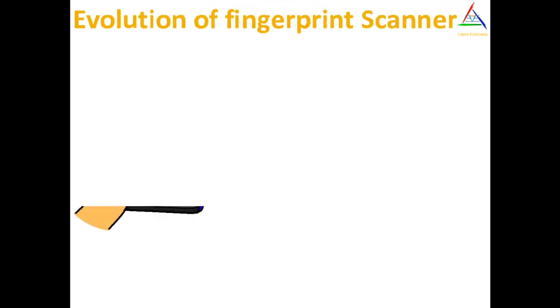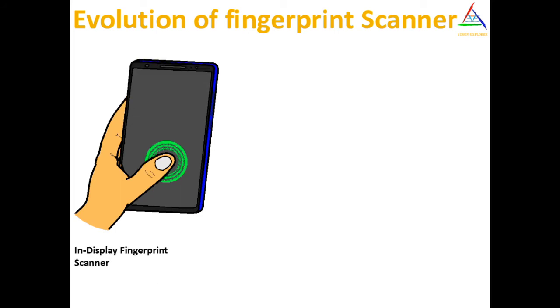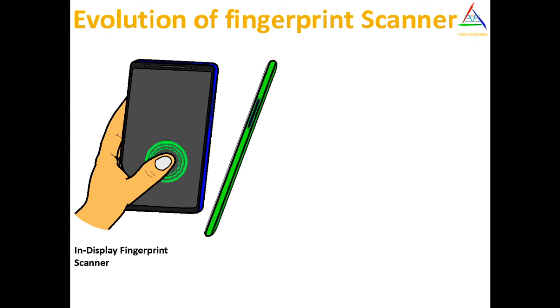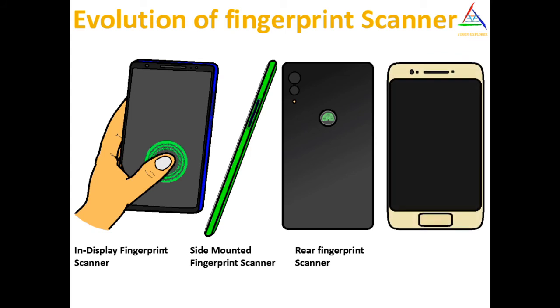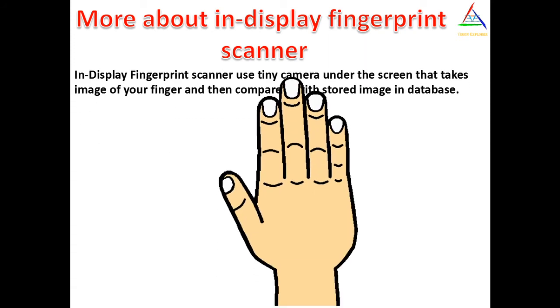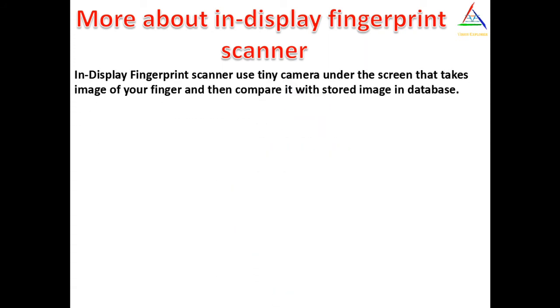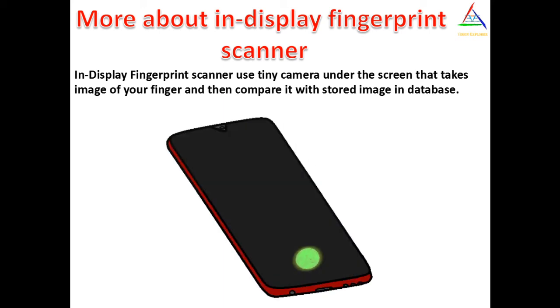With the evolution of smartphones, the evolution of fingerprint scanners can also be seen — from physical fingerprint scanners to in-display fingerprint scanners. Physical fingerprint scanners can be rear, front, or side mounted on your smartphone. But a front physical fingerprint scanner can minimize your viewing experience, so companies introduced in-display fingerprint scanners, which use a tiny camera under the screen to take an image of your fingerprint and compare it with the stored image in the database.